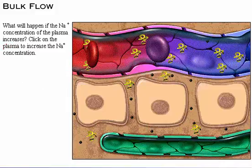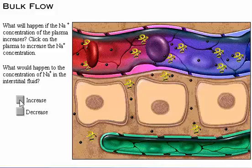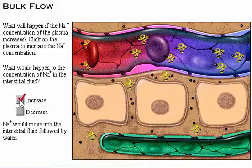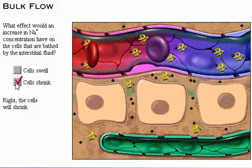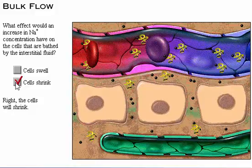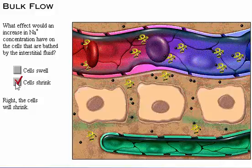If the sodium concentration in the plasma is increased, sodium would move into the interstitial fluid followed by water, and the cells will shrink. The high concentration of sodium and other small solutes in the extracellular fluid exerts significant osmotic pressure on cells and contributes to determining the fluid levels in the intracellular compartment.